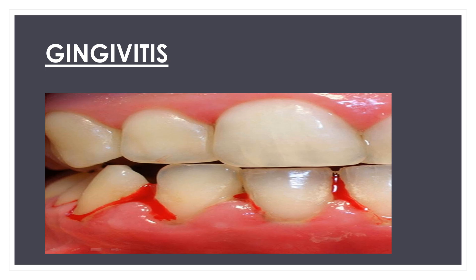The next condition is gingivitis. It is inflammation on the surface portion of the gum around and between the crowns of the teeth. There is inflammation visible in the diagram, and often bleeding also occurs because of gingivitis. Plaque and tartar build-up can lead to gingivitis. So when you have bleeding gums, that is gingivitis.